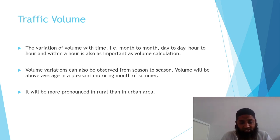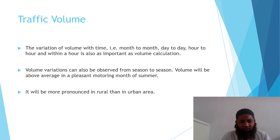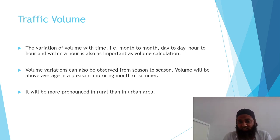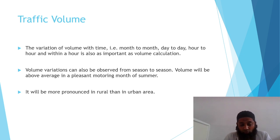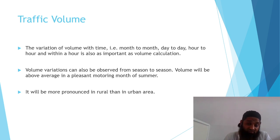Volume variations can also be observed from season to season. In different seasons there are variations in traffic volume. In the summer season, during the afternoon time, the traffic volume is not that much — it is more at the start of the day and at the end of the day, that is in the morning and evening. Depending on the season, traffic volume changes. Volume will be above average in the pleasant morning months of summer. Depending on the season, traffic volume is calculated from day to day, month to month, and hour to hour as needed.